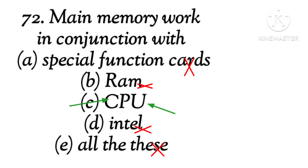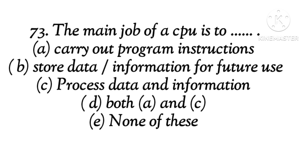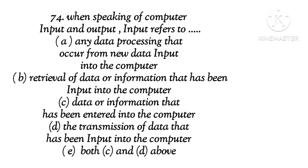Question 23: The main job of a CPU is to do what. The right answer is D, both A and C. Question 24: When speaking of computer input and output, input refers to dash. The right answer is E, both C and D.